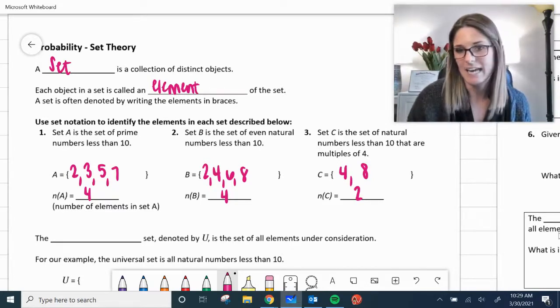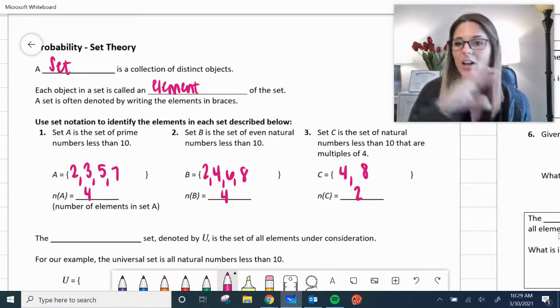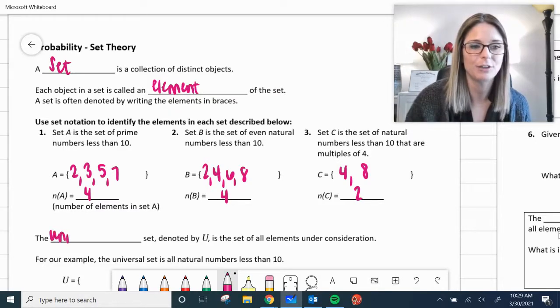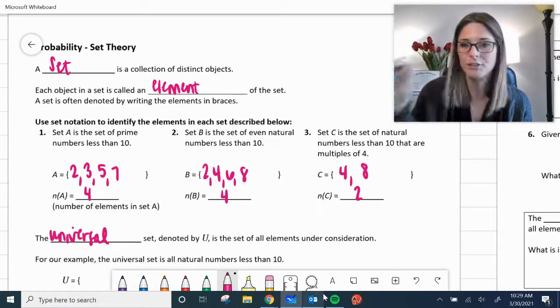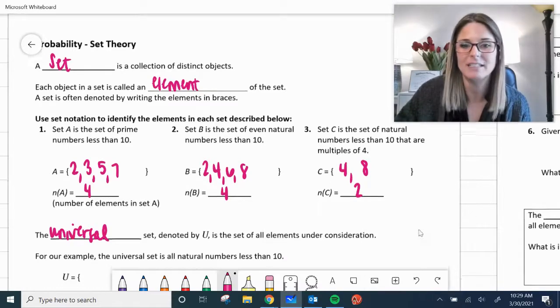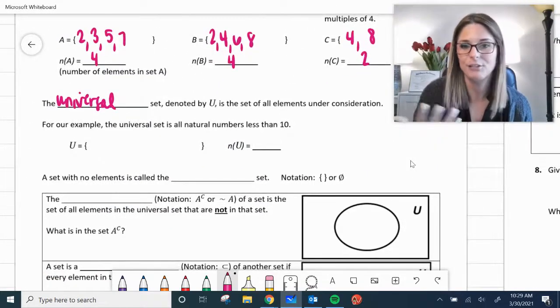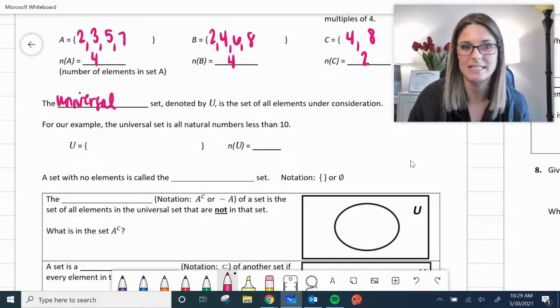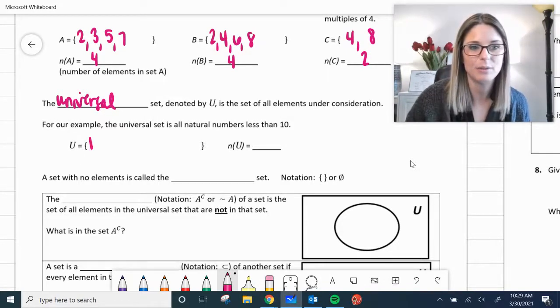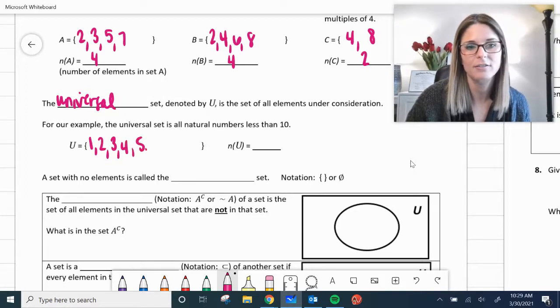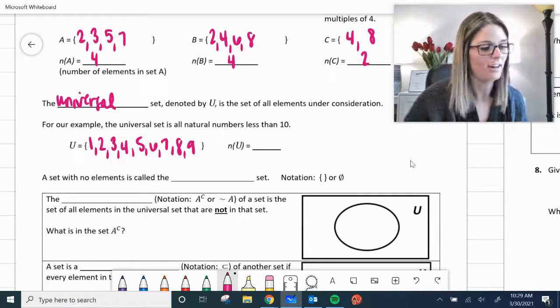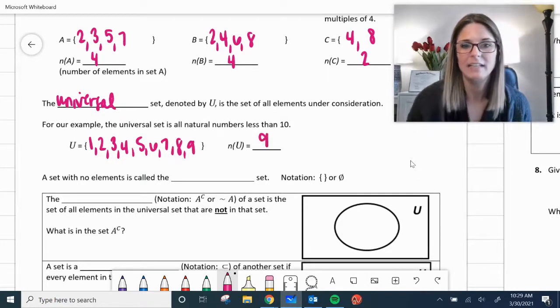The blank set denoted by U as a set of all elements under consideration. That's going to be your universal set. Your universal set denoted by capital letter U is going to be all of your elements. For our example, our universal set has been all the natural numbers less than 10. The entire list would be 1, 2, 3, 4, 5, 6, 7, 8, and 9. And there are 9 elements in that list.